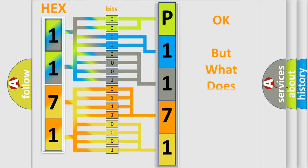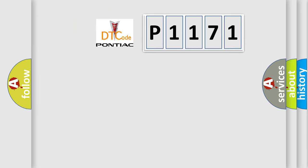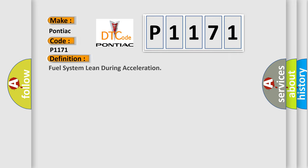The number itself does not make sense to us if we cannot assign information about what it actually expresses. So, what does the diagnostic trouble code P1171 interpret specifically for Pontiac car manufacturers? The basic definition is: Fuel system lean during acceleration.